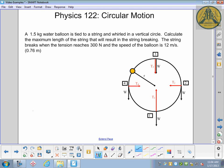We've got a 1.5 kilogram water balloon tied to a string whirled around in a vertical circle, making life interesting. Calculate the maximum length of the string that will result in the string breaking, and it will break when it reaches a tension of 300 newtons. Speed of the balloon at the time we're trying to get to is 12 meters per second. So if everything goes well, hopefully we get around 0.76 meters or about 75 centimeters.